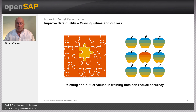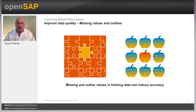For missing values, in the case of continuous variables you can impute the missing values with the mean, median, or mode. For categorical variables, you can treat missing values as a separate class. You can also build a model to predict the missing values — for example, KNN imputation offers a great option to deal with missing values.